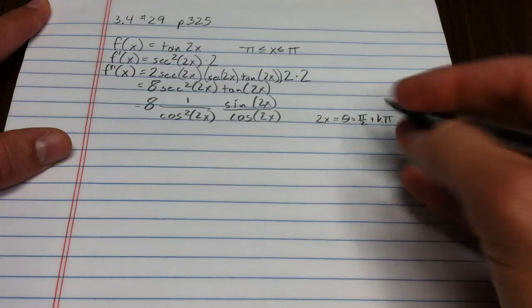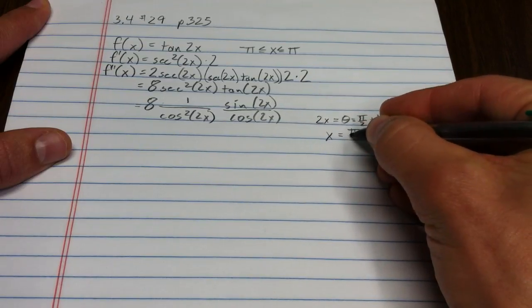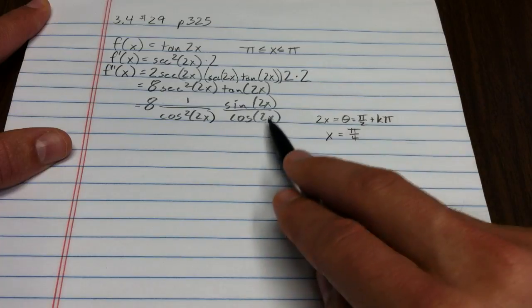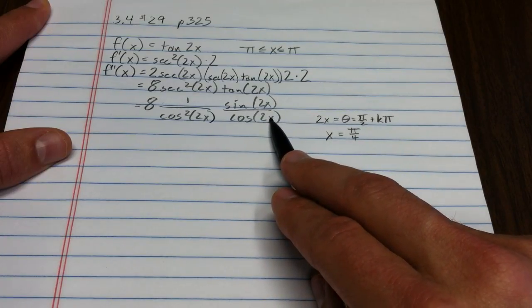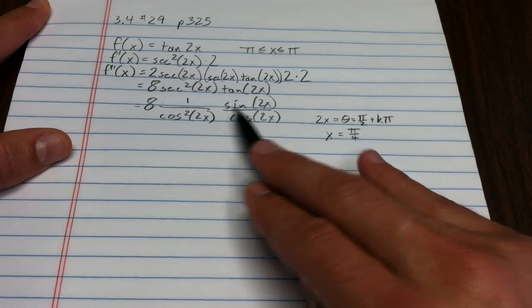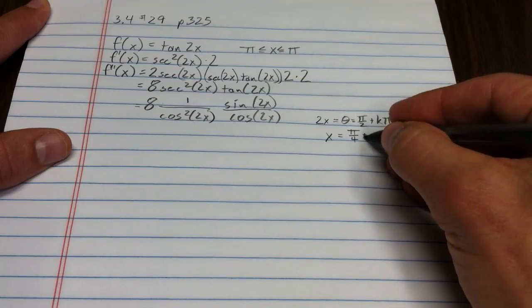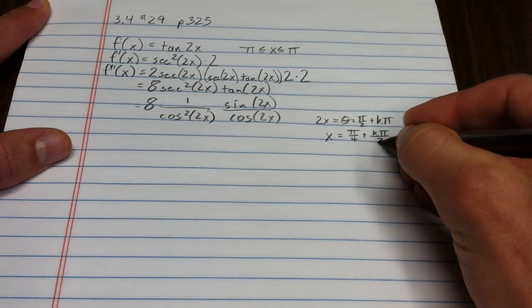Well, I kind of need to divide everything by 2. That's pi over 4. Notice if you plugged pi over 4 into here, we'd get 2 times pi over 4, which is pi halves. Cosine of pi halves would be 0. So, that would be a place where the denominator is undefined. Then we have k pi over 2.